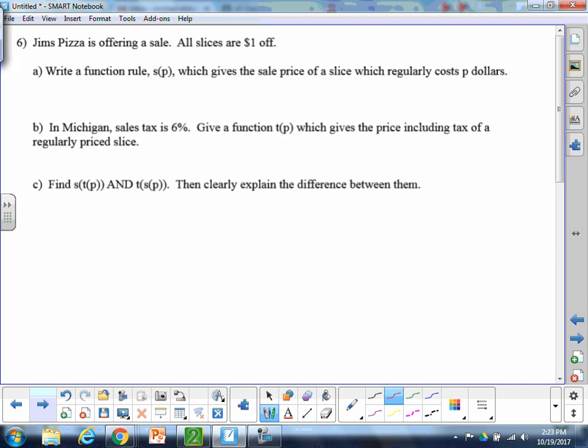All righty. Next problem, we'll say Jim's Pizza is offering a sale. Slices are $1 off. So part A, can we write a function rule, S of P, for the sale price, which gives the sale price of a slice which regularly costs P dollars? So the normal price is P, so we need to think about what effect is this sale having. And it tells us the sale is just taking $1 off. So the sale price, which depends on the original price P, is just going to be the original price minus $1. Wouldn't that just take away $1 from the original price? That would give you the sale price.